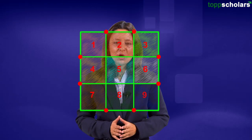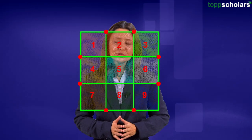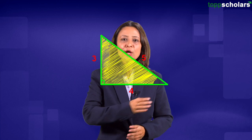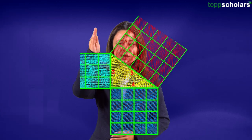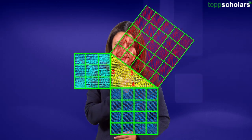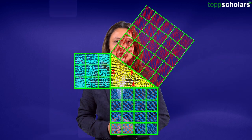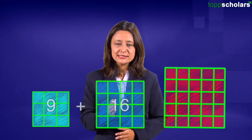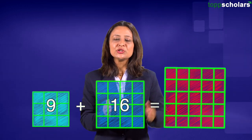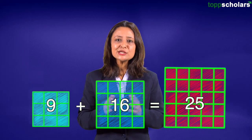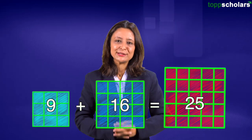Now keeping this in mind, draw a right angled triangle with sides 3 unit, 4 unit and hypotenuse 5 unit. Draw squares using the length of each side. Now observe, the number of unit squares in the two smaller figures is equal to the number of unit squares in the third figure, thus proving the Pythagoras theorem.